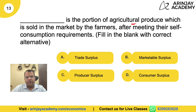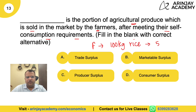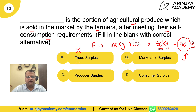Question 13: Blank is the portion of agricultural produce which is sold in the market by the farmer after meeting their self-consumption requirement. Suppose a farmer produces 100 kg of rice. He needs 50 kg to feed his family, so the balance is 50 kg. Is this called trade surplus? A farmer is not involved in trade, so trade surplus is wrong. Producer surplus and consumer surplus are also not correct here. The correct answer is marketable surplus — the part of produce that the farmer can take to the market.